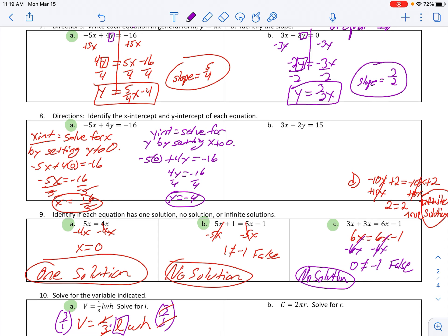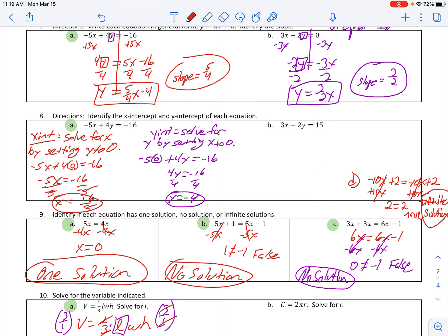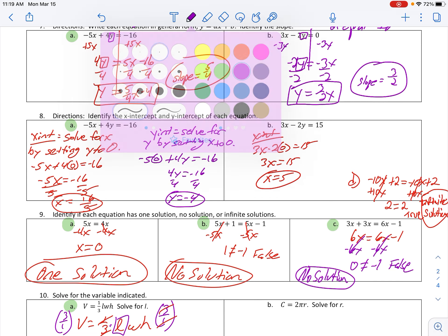Part B, get the X and Y intercepts. So, just like we did in part A, I'm going to find the X intercept first by setting Y to 0 and solving out for X. So, it's just going to be a quick divide by 3. The X intercept is 5.